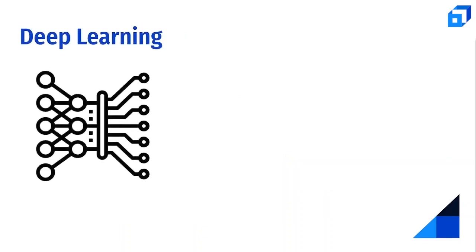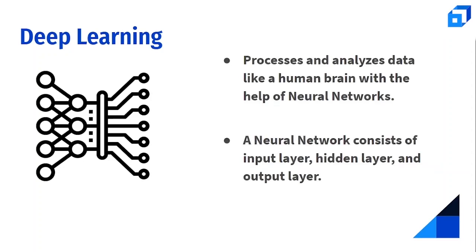The second subdomain of AI is deep learning. It is a type of AI that teaches a computer to behave like the human brain — from the learning stages to predicting and classifying information. A deep learning network processes and analyzes data the way a human brain would, with the help of neural networks.